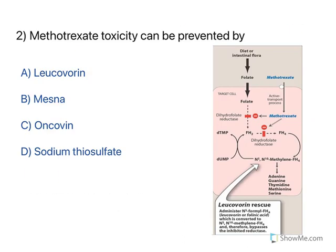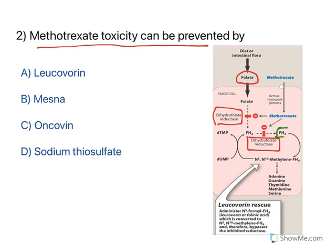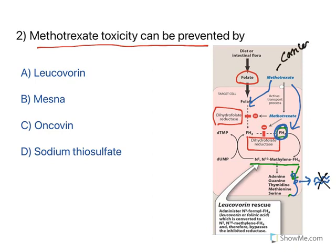Moving to the next question: Methotrexate toxicity can be prevented by. Let us understand the action of Methotrexate. Methotrexate inhibits folate activation. Folates are taken through the diet and activated by the enzyme dihydrofolate reductase, resulting in formation of tetrahydrofolate. This is converted to N5-N10 methylene tetrahydrofolate, which provides all the DNA nitrogen bases — adenine, guanine, thymidine, and even serine. Methotrexate inhibits dihydrofolate reductase. When the enzyme is inhibited, tetrahydrofolate is not formed, DNA nitrogen bases are not produced, DNA formation is not possible, and cell multiplication stops. So Methotrexate is widely used as an anti-neoplastic drug to treat cancer.